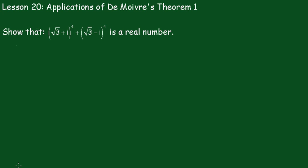We have to show that (√3 + i)⁴ + (√3 - i)⁴ is a real number. To do that, first of all, I'll rewrite this in the polar form.